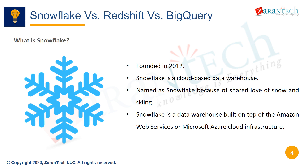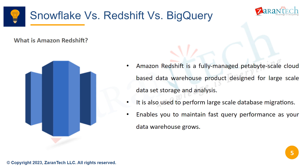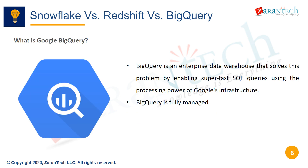Snowflake is a cloud-based data warehouse launched in 2012, built on top of public cloud infrastructure like AWS and Azure. The name signifies the founder's love for snow sports. Amazon Redshift is a petabyte-scale cloud data warehouse service offered by AWS, designed for large-scale data storage and analysis with fast query performance as data volumes grow. BigQuery is Google's fully managed enterprise data warehouse, enabling fast SQL queries leveraging Google's infrastructure.